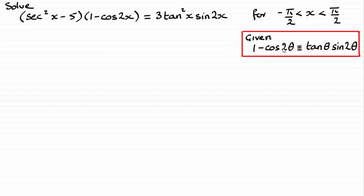pick that identity up. So substituting that in, there it is there, tan x sin 2x in place of 1 minus cos 2x.